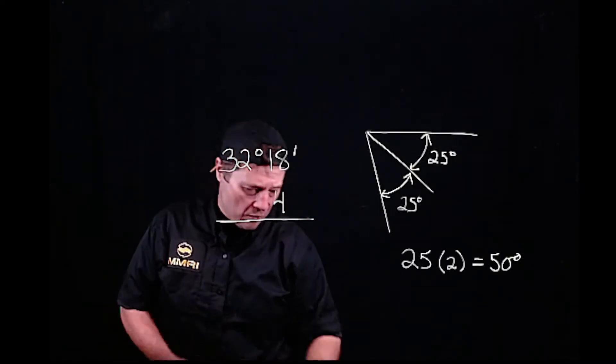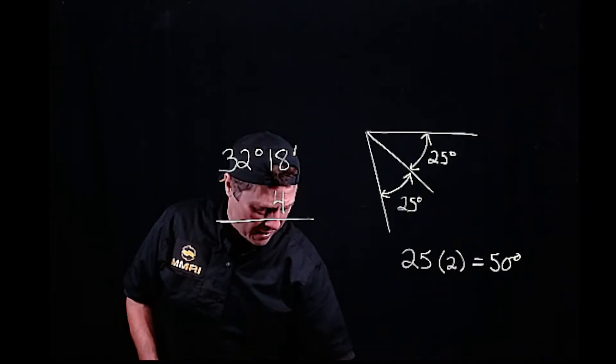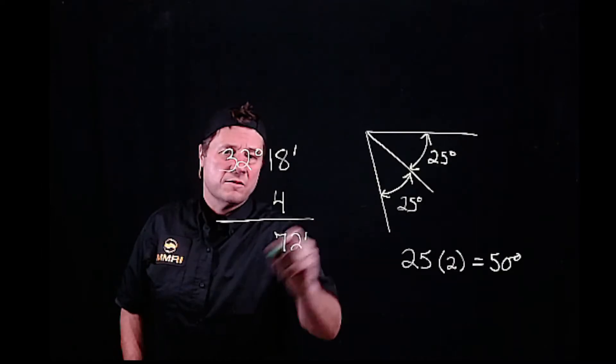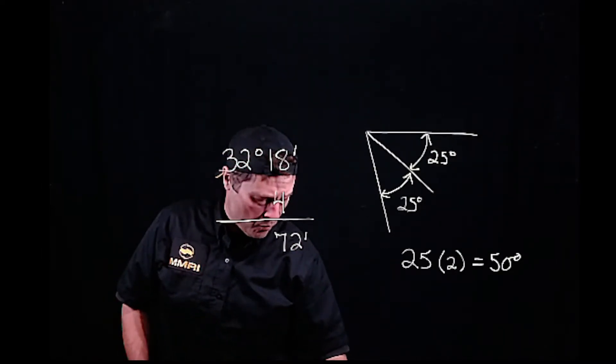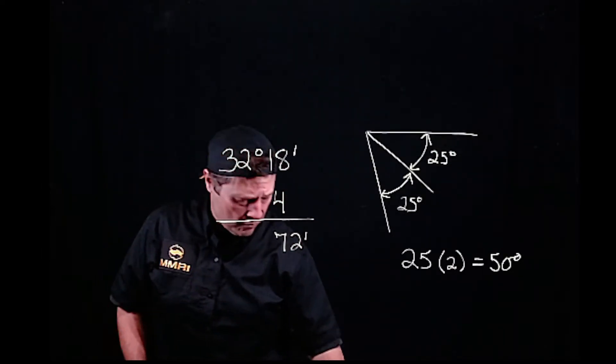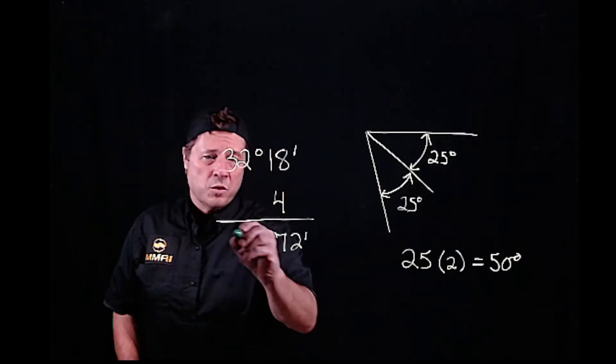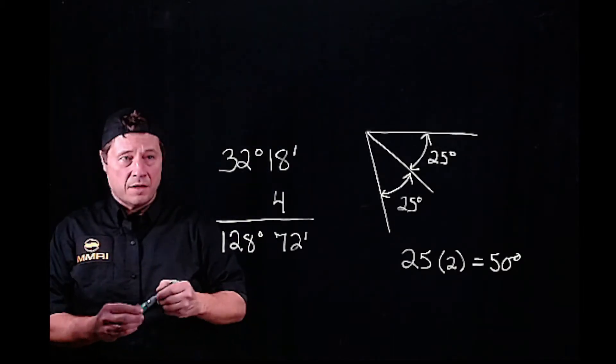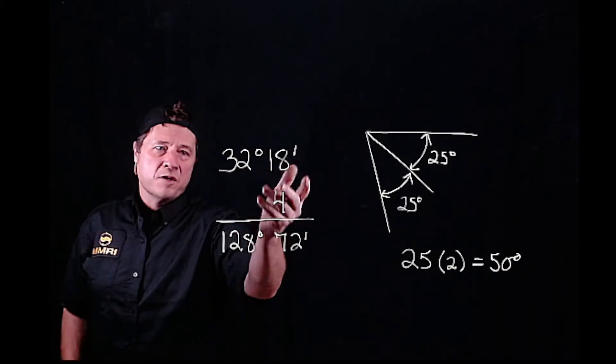We would do 4 times 18, so we'd say 72 minutes. Then we do 4 times 32, which is 128. Both of these units are separate.